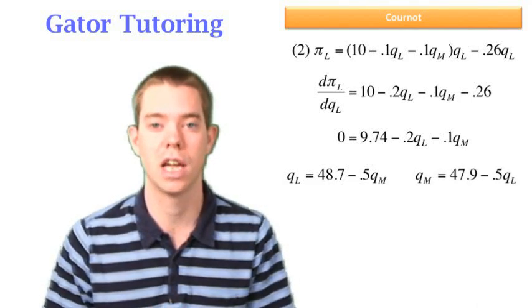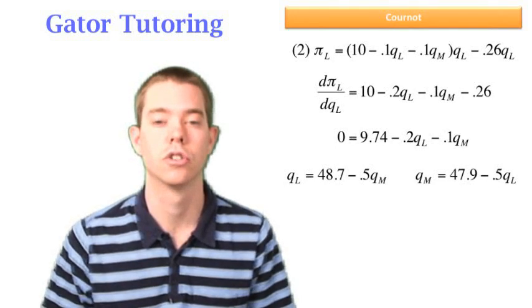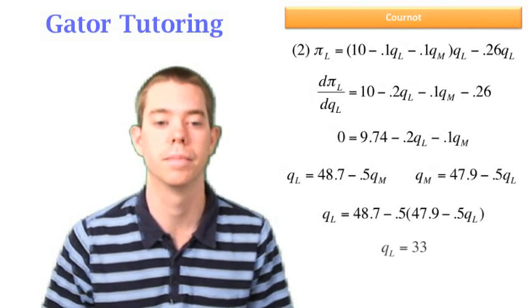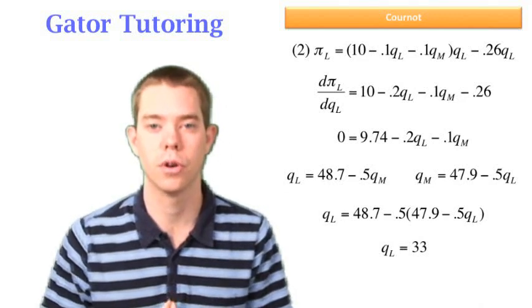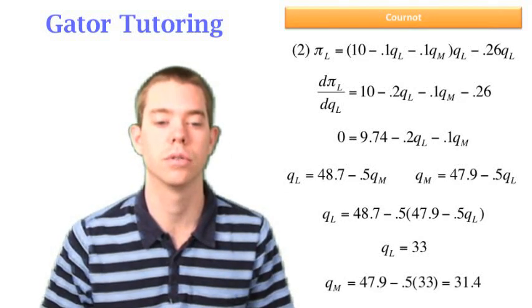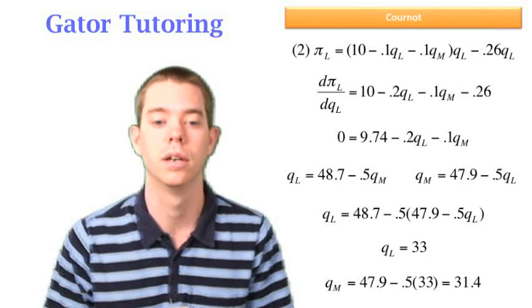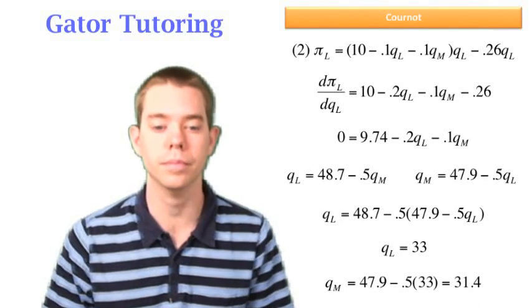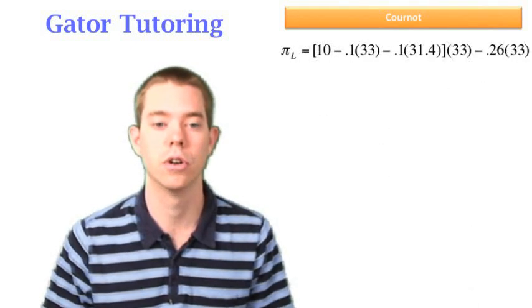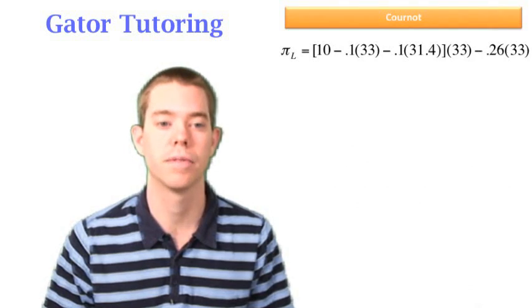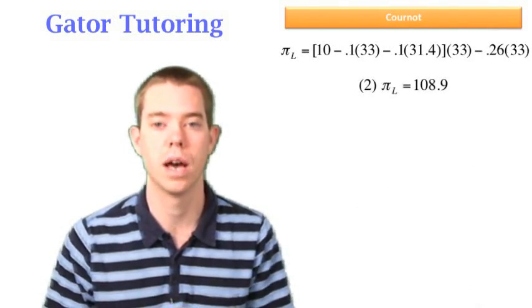Matt's reaction function is the same, of course, it hasn't changed. So we're going to use substitution and solve for QL and QM again. We find QL to be 33, we can plug that into QM and find QM to be 31.4. So now in scenario two, Larry's total profit is going to be equal to 108.9.